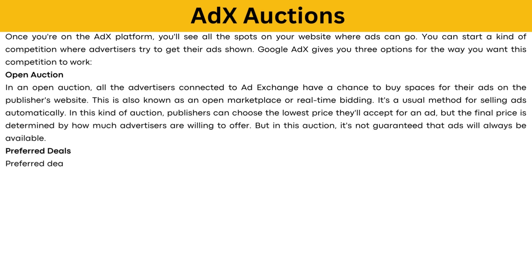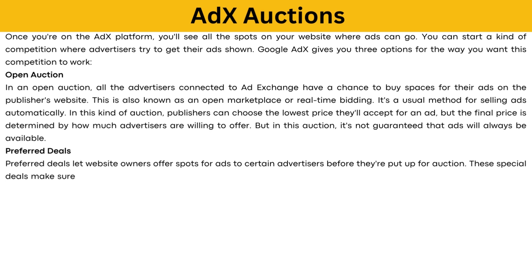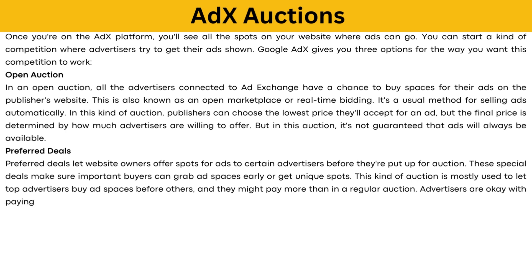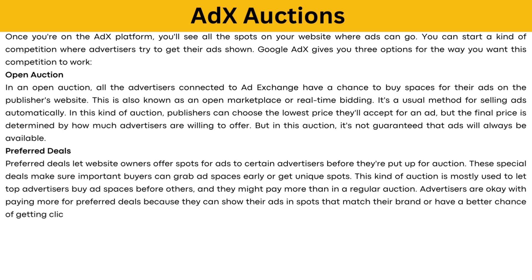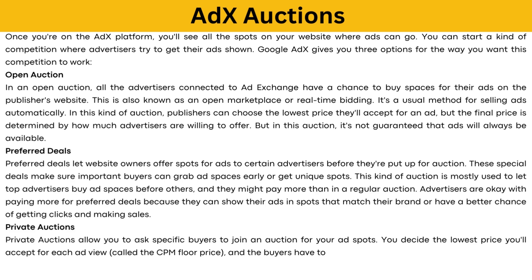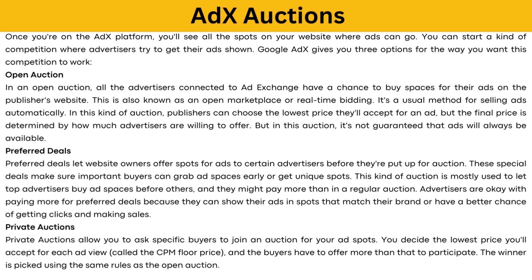Preferred Deals let website owners offer spots for ads to certain advertisers before they're put up for auction. These special deals make sure important buyers can grab ad spaces early or get unique spots, and they might pay more than in a regular auction. Advertisers are okay with paying more for preferred deals because they can show their ads in spots that match their brand or have a better chance of getting clicks and making sales. Private Auctions allow you to invite specific buyers to join an auction for your ad spots. You decide the lowest price you'll accept for each ad view — called the CPM floor price — and buyers have to offer more than that to participate. The winner is picked using the same rules as the open auction.